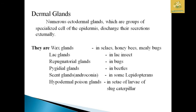Dermal glands are a specialized set of epidermal cells used for the secretion of wax. Based on the insect type, they are classified as wax glands (found in scale insects, honeybees, and mealybugs), lac glands (present in lac insects), repugnatorial glands (found in bugs), pygidial glands (in beetles), scent glands (in some Lepidoptera), and hypodermal poison glands present in the stinging hairs of caterpillars.